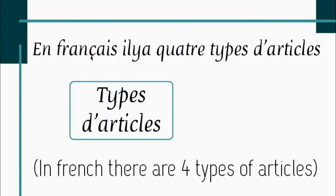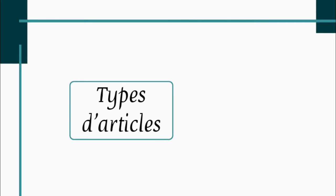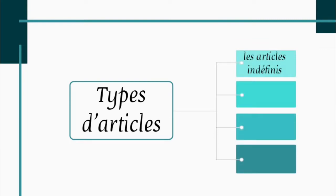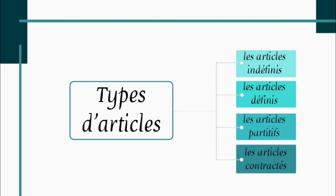En français, il y a quatre types d'articles. In French, there are four types of articles: namely, les articles indéfinis, les articles définis, les articles partitifs, les articles contractés.